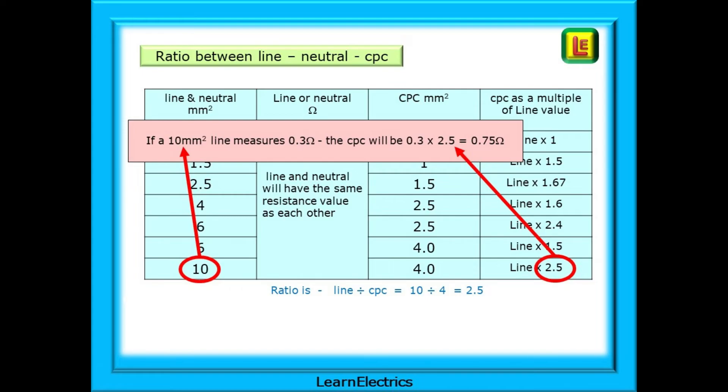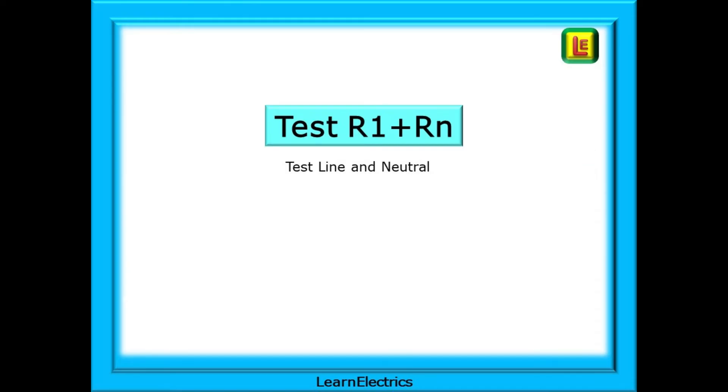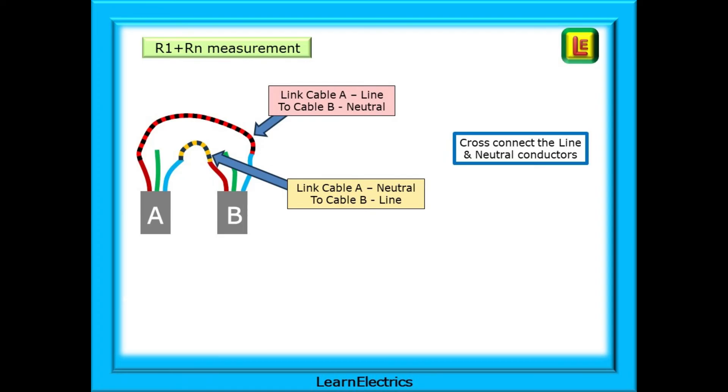Now we can test for big R1 plus big Rn, the effective resistance of the line and neutral as a parallel pair of conductors. We must cross-connect the line and neutral wires at the consumer unit. Using jumper wires, crocodile clips, chop blocks or WAGOs, link cable A line to cable B neutral. Then link cable A neutral to cable B line. Get them the wrong way round and the test results will be all over the place.